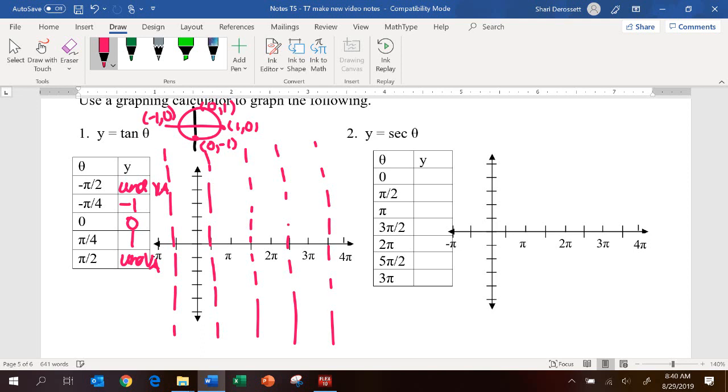Plotting these points, at negative pi over 4, we're going to be at negative 1. At 0, we're at 0. And at pi over 4, we're at 1. And so, this is the way that tangent graph is going to look. And it's just going to continue like that forever. So, is this tangent graph increasing or decreasing, as we read from left to right?